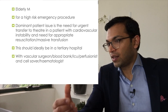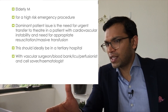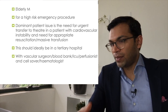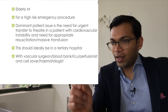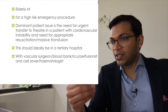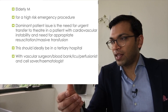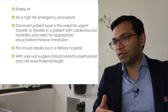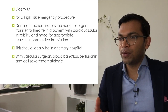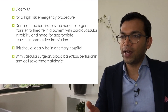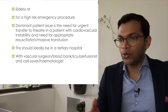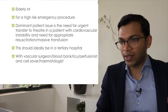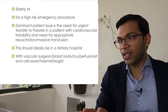That was very brief, which is exactly right — elderly male, high-risk, emergency procedure, dominant patient issue is cardiovascular instability. In real life, all you care about is getting that cross-clamp on — it's all about transfer to theatre. I'd ideally want this done in a tertiary hospital with vascular surgeon, blood bank, ICU, perfusion, cell saver, and haematologist. One thing to note: if you use vague terms like 'haemodynamically stable induction,' follow it up quickly with detail — otherwise the examiner gets no real information about what you actually know.